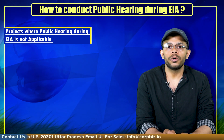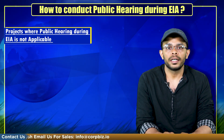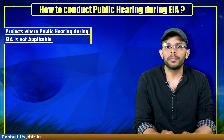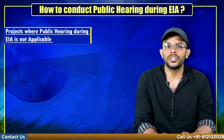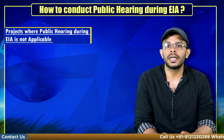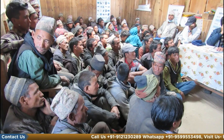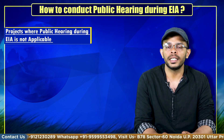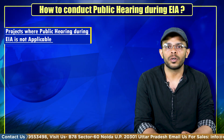It is also important to note where public hearing is not required. The EIA notification introduced in 2006 carried many provisions from the 1994 notification but included some provisions where a public consultation can be foregone. Apart from all category A and B1 projects or activities that must mandatorily include public hearing in the EIA process, some projects and activities are also excluded from this process.